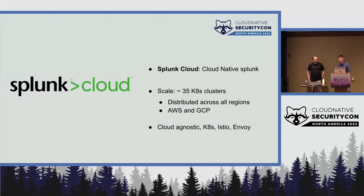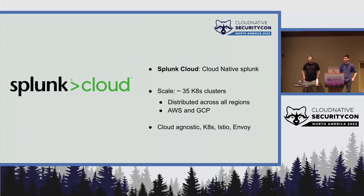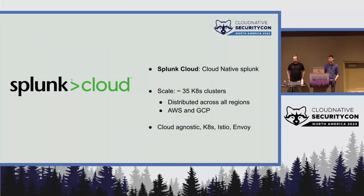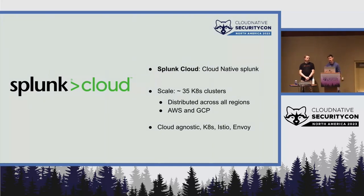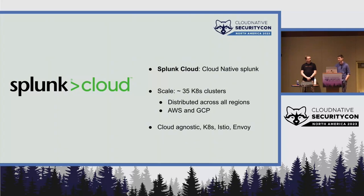Today we want to talk about Splunk Cloud and the story behind it. Splunk Cloud is basically a redesign of Splunk to be cloud native — we wanted to standardize on the Kubernetes API and be cloud agnostic as much as possible. Today we run both in AWS and GCP, mainly in AWS, in about 35 clusters all over the world. The tech stack we'll discuss is Kubernetes, Istio, and Envoy.